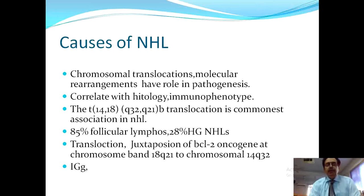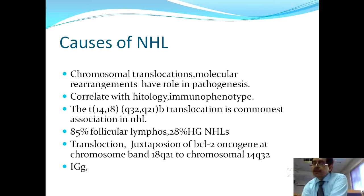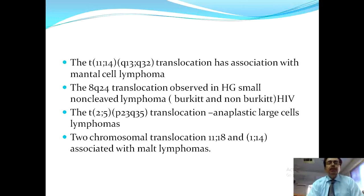With this translocation there is juxtaposition of the BCL oncogene at chromosome band 18 and the immunoglobulin gene at chromosome 14. By juxtaposition, the immunoglobulin genes and BCL genes lie close together, producing different effects on the cell type of non-Hodgkin lymphomas. Similarly, translocation of chromosomes 11 and 14 has an association with mantle cell lymphoma.